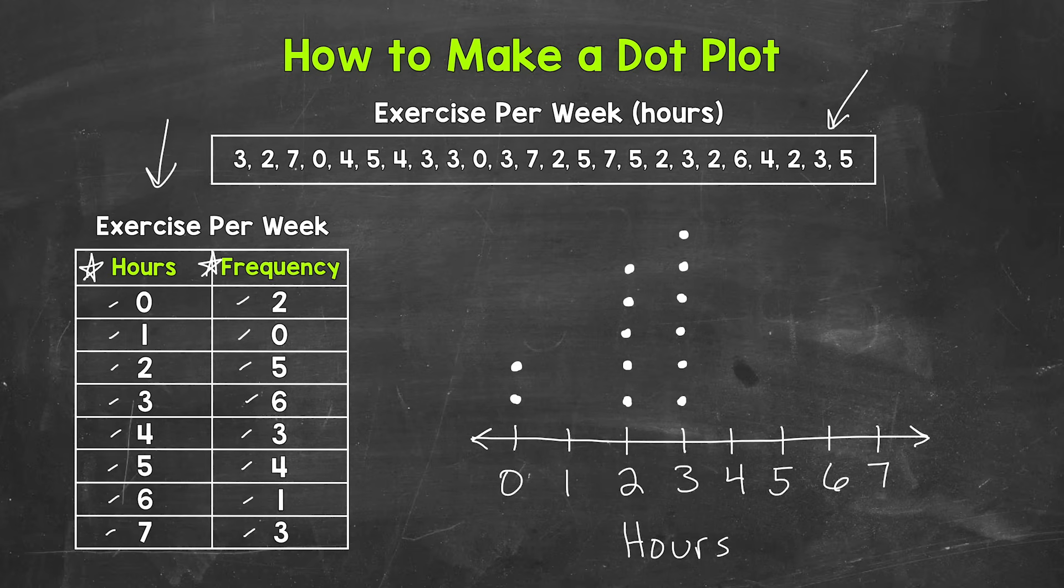Let's move on to four hours. We have three people, so three dots. One, two, three. Next, we have five hours. We have four people, so four dots above five. One, two, three, four.